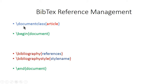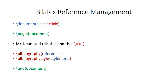Now the basic skeleton of the document is complete. You will have to write your introduction, abstract, methodology, and results sections in between \begin{document} and \bibliography. For example, after a sentence like 'Mr. Khan said this and that,' you give the citation using \cite{} with a key inside the curly braces. Every reference in the .bib file has a key, and as soon as you start typing \cite, all the keys will appear and you can select one.